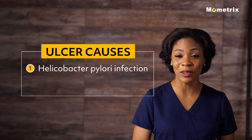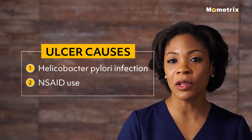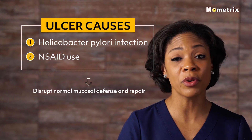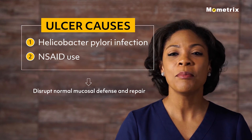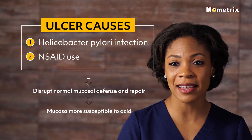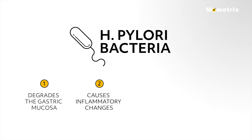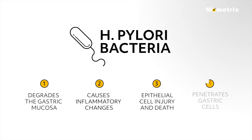Nearly all ulcers are caused by Helicobacter pylori infection or NSAID use. H. pylori and NSAIDs disrupt normal mucosal defense and repair, making the mucosa more susceptible to acid. H. pylori bacteria degrades the gastric mucosa, causes inflammatory changes in mucosa, epithelial cell injury and death, and penetrates gastric cells, weakening the mucous layer.